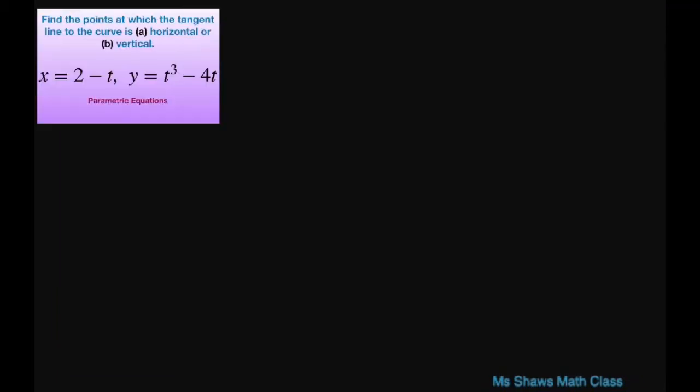So the first thing we want to do for our parametric equations is to take our derivatives of y and x with respect to t. So the derivative with respect to t of y is t cubed minus 4t, which equals 3t squared minus 4.